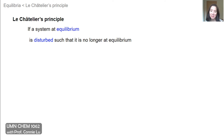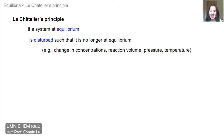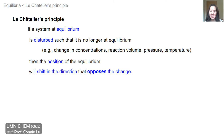If a system is at equilibrium and is disturbed such that it is no longer at equilibrium — and this disturbance can be a change in concentration, reaction volume, pressure, or temperature — then the position of equilibrium will shift in the direction that opposes the change. The most key word here is 'opposes.' So whatever the change is, the system will shift in the opposite direction.